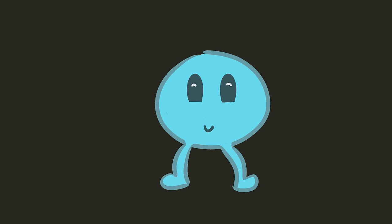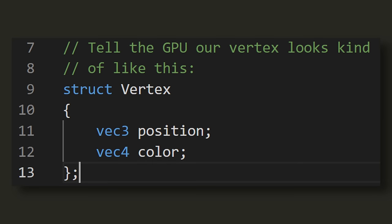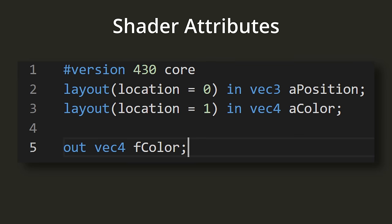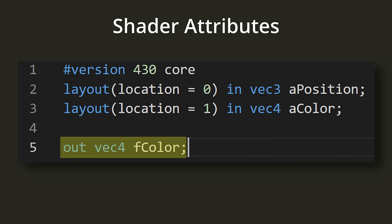So we've created a buffer on the GPU and possibly uploaded data. But how do we use that data? We can use it with a vertex shader and a fragment shader. Say we want to send the position and color of the vertex — position as three floats and color as four floats. In the vertex shader, we can write layout specifications. We are basically saying that we expect a vertex attribute to exist at specific locations, so a vertex contains two attributes: a position and a color. I like to prefix input variables with an 'a' to denote attributes and output variables with an 'f' to denote they're being sent to the fragment shader.